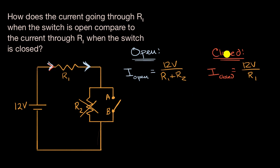So when you closed the circuit, you've essentially taken a resistor out. And so if you took a resistor out, you're going to increase the current. So you could just write it as, the current when the switch is open is going to be less than the current when the switch is closed.